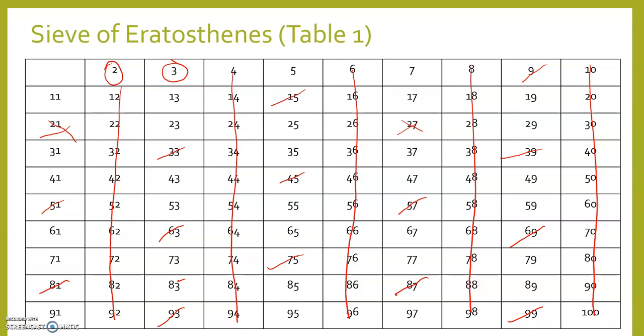Looking at our next number in our chart is 5. 5 is prime. Its only factors are 1 and 5. So now we can cross out all the multiples of 5 that are not gone yet. Which is our whole 5 column. And our whole 10 column is gone.